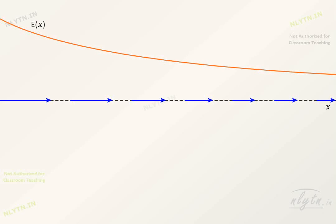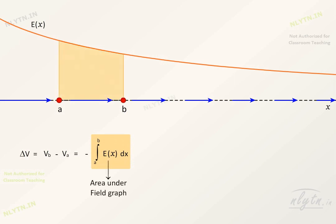Let us say that we know the variation of field along a line. As we have discussed, the potential difference between two points is equal to the negative of the line integral of field along this path. Since this term represents the area under the field graph, the potential difference between two points is the negative of the area under the field graph between those points.